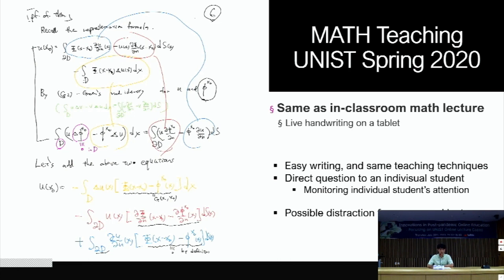We simply explain the course material by writing on this blank page and discussing with students. It requires the same teaching techniques, and also writing is easy, erasing the page or board is much easier. And also, it was possible to ask individual students direct questions, because we implemented this method for small classes, so we had all the students on the screen. So it's good for monitoring individual students' attention.